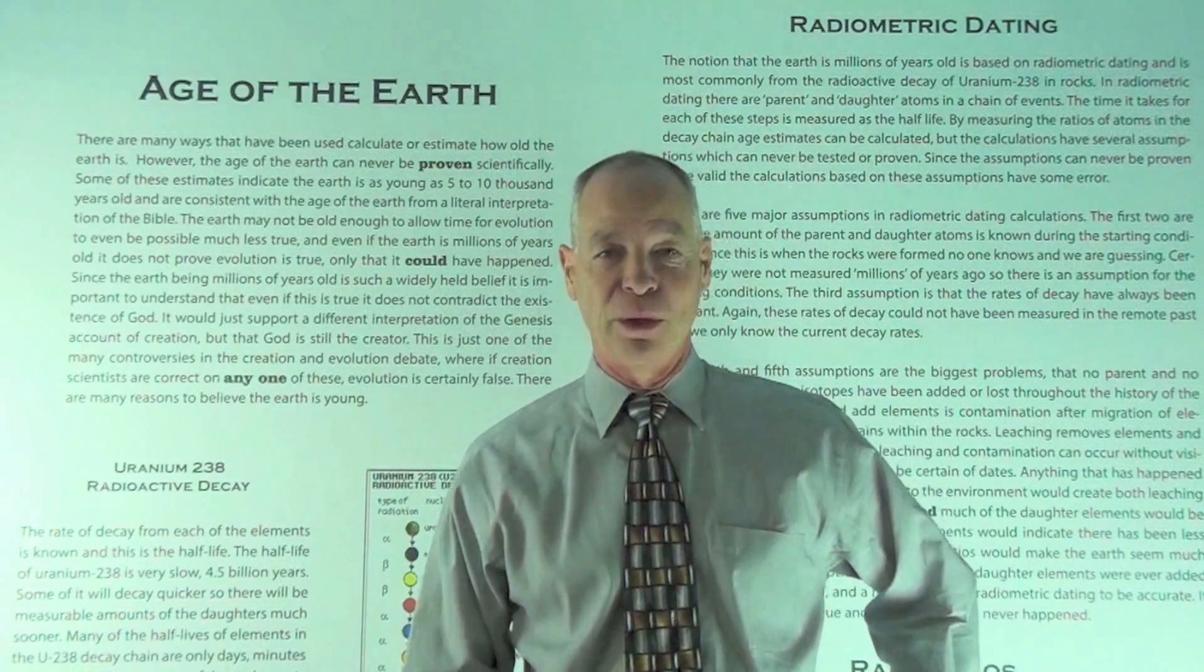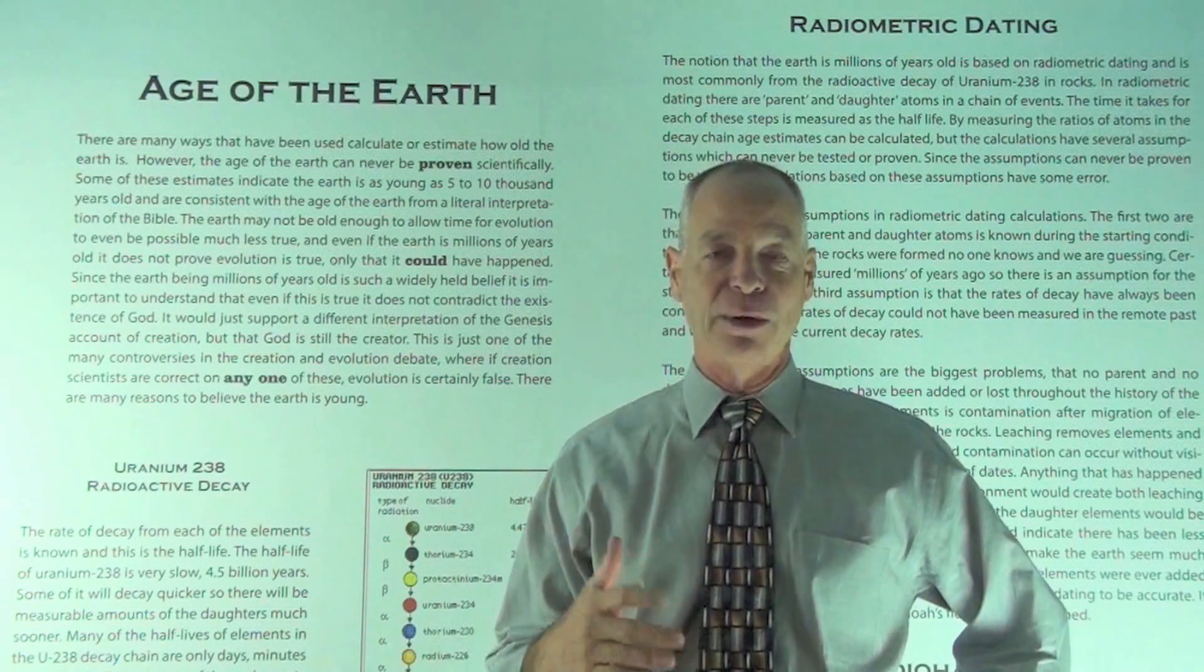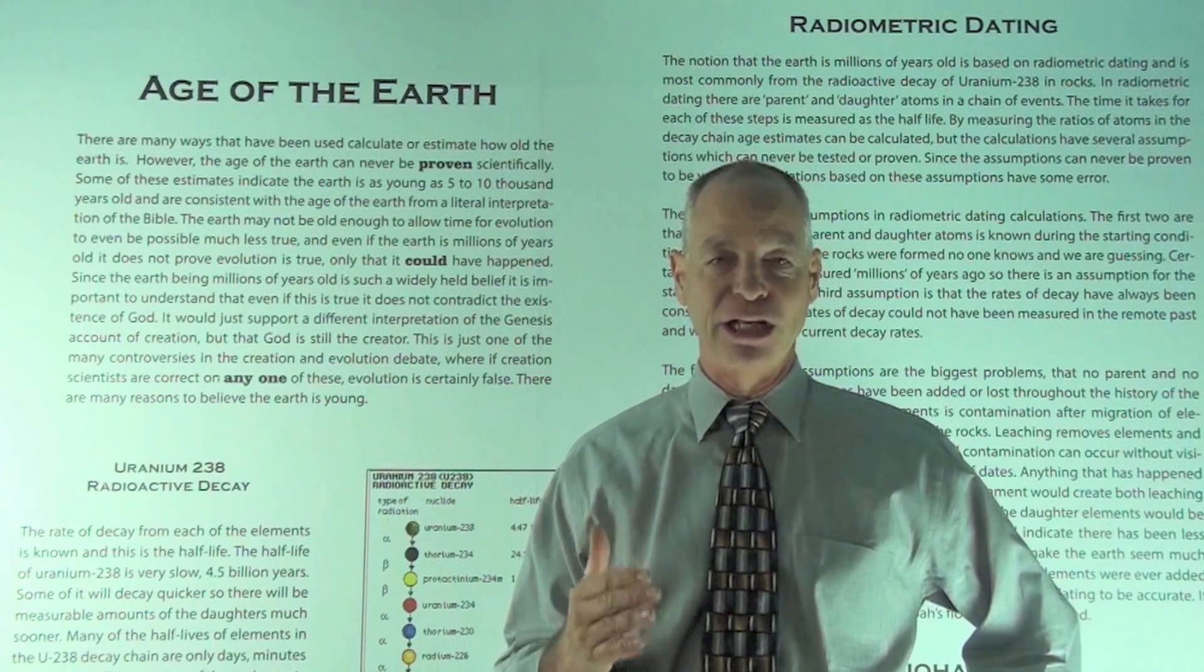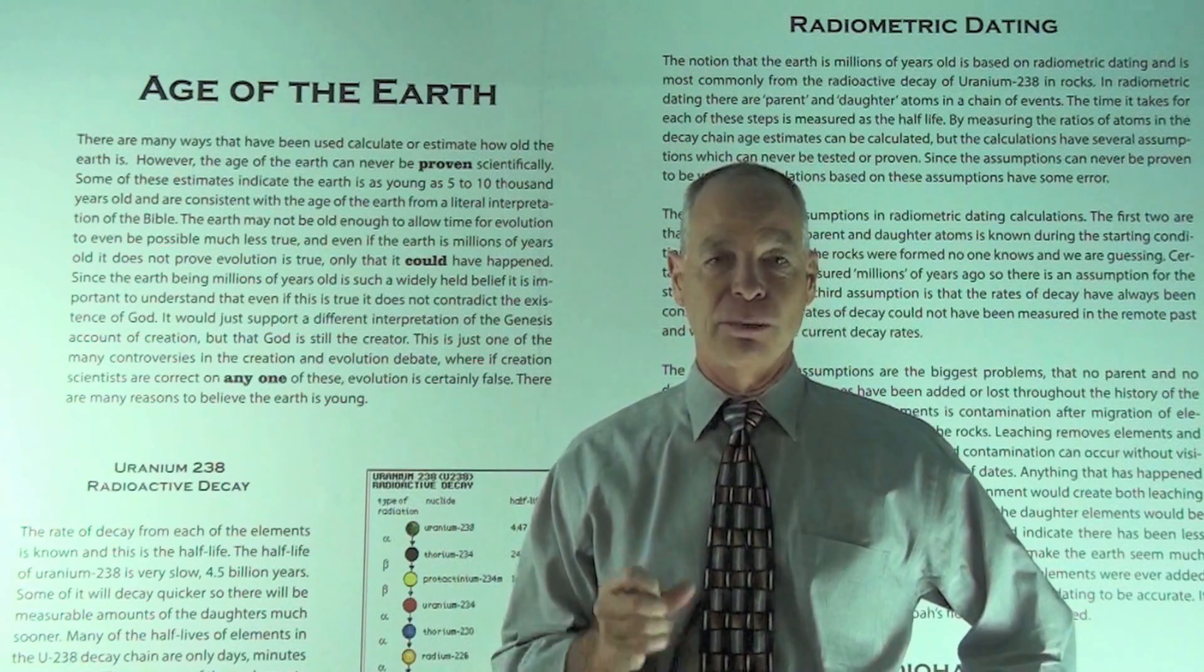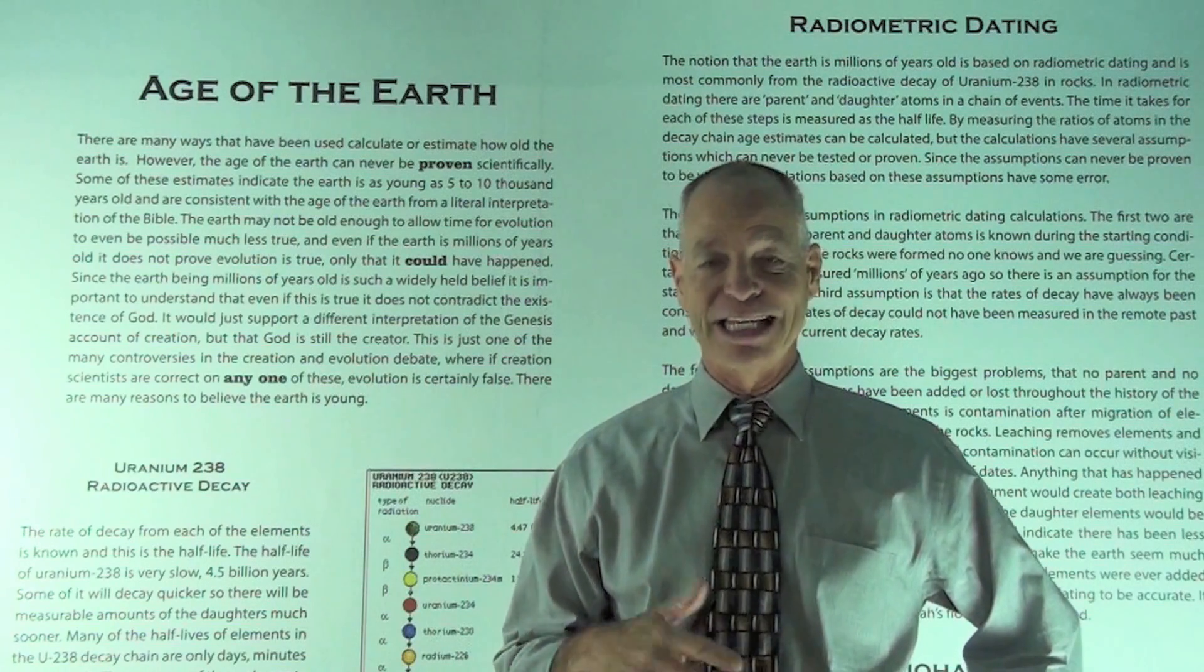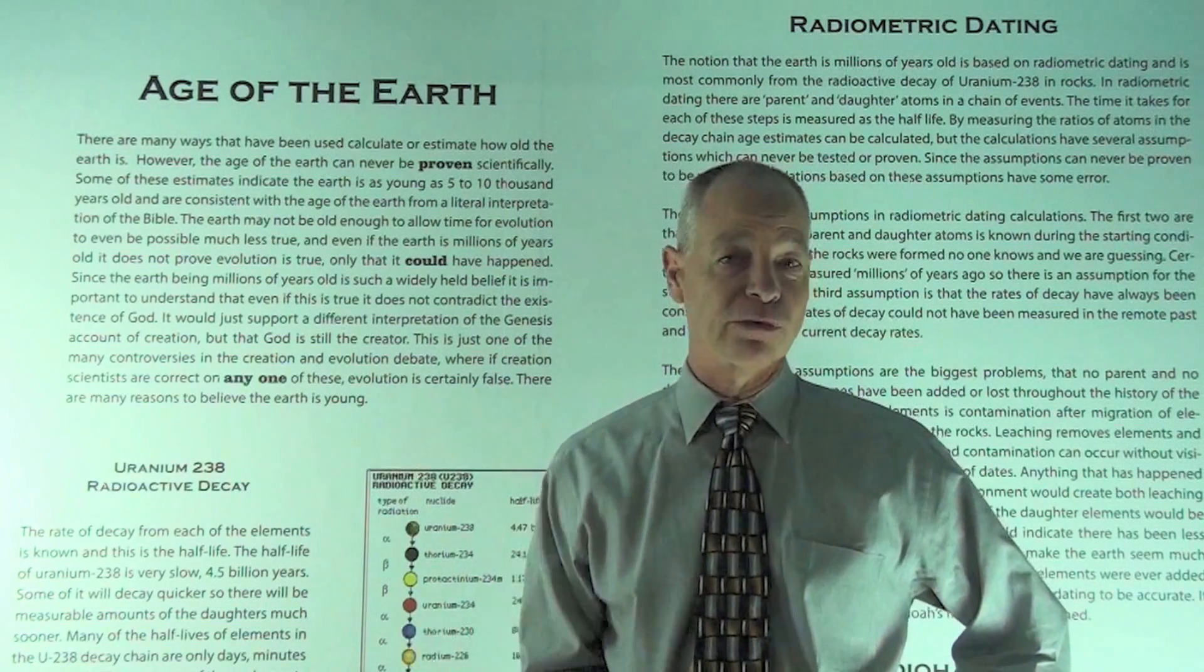How old is the Earth? Well, for evolution to be true, it would have to be millions of years old to allow enough time for all of these innumerable events to happen for the process of evolution. But if the Earth is young, then evolution is definitely not true because there's not enough time for evolution to have happened.